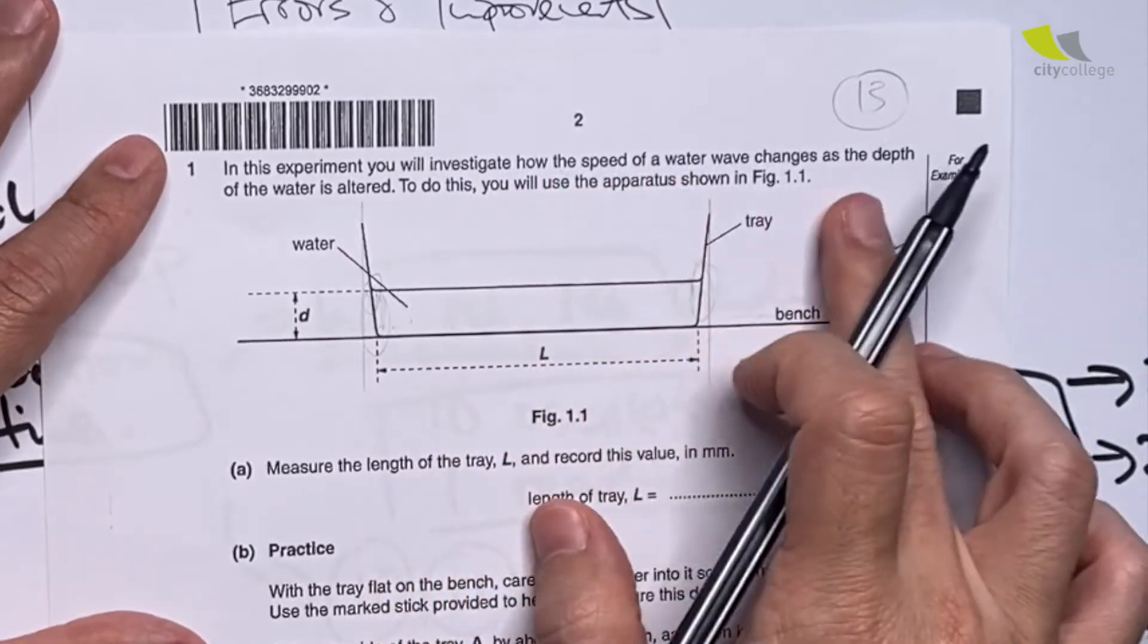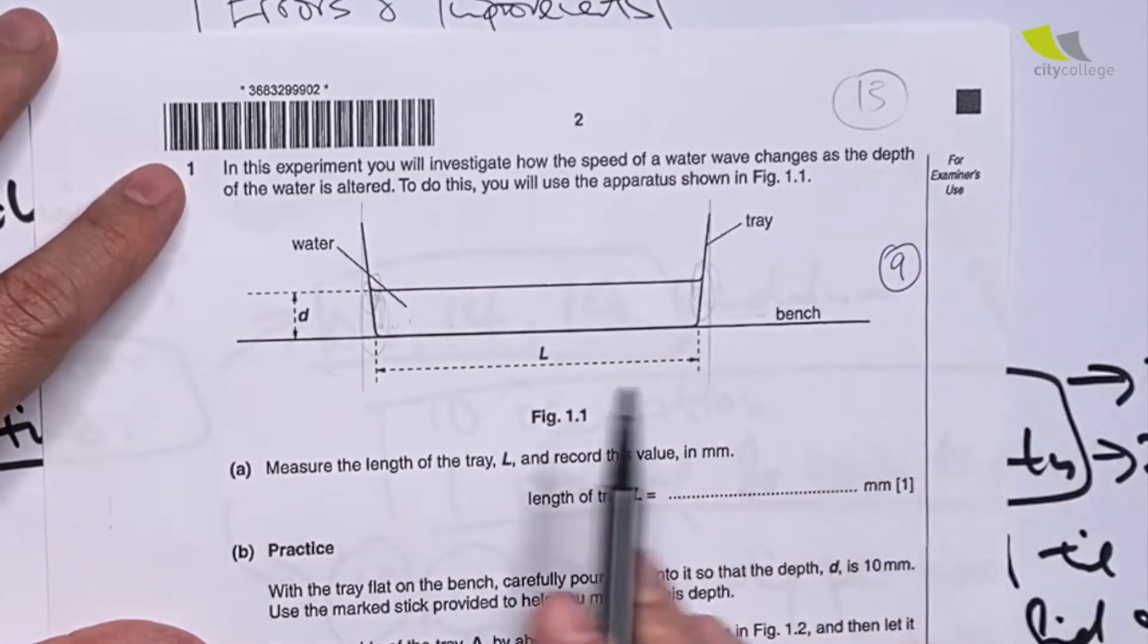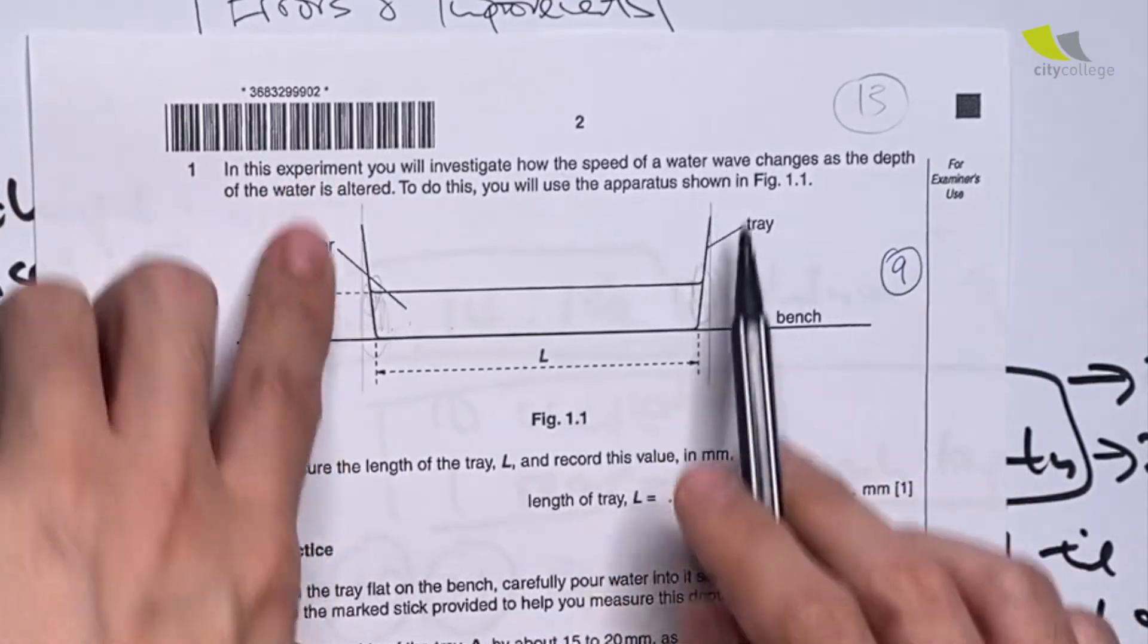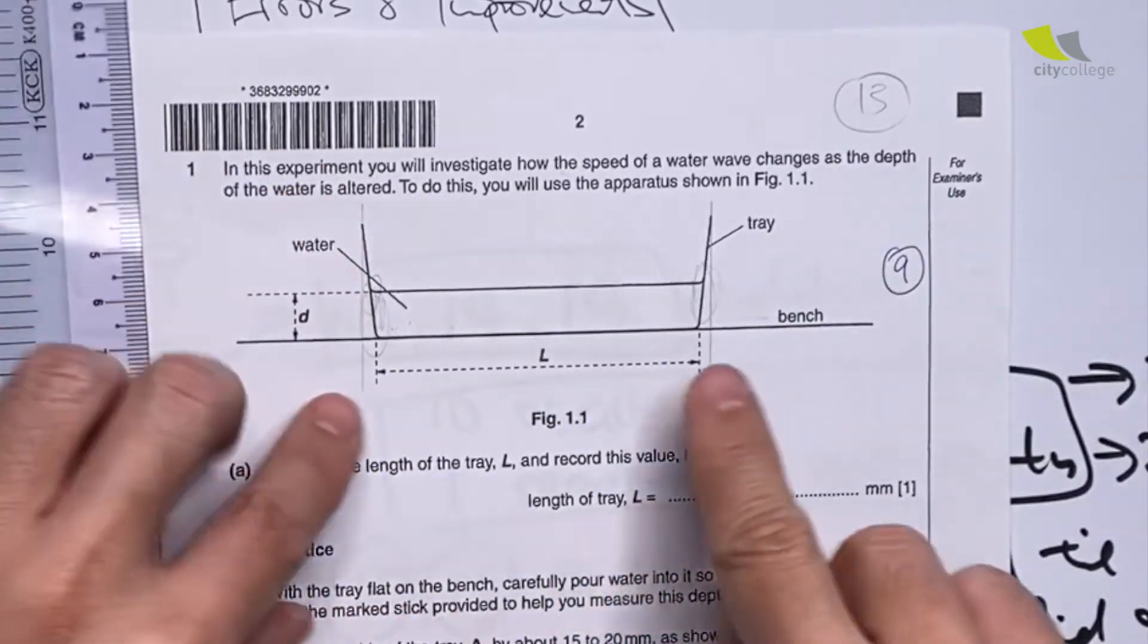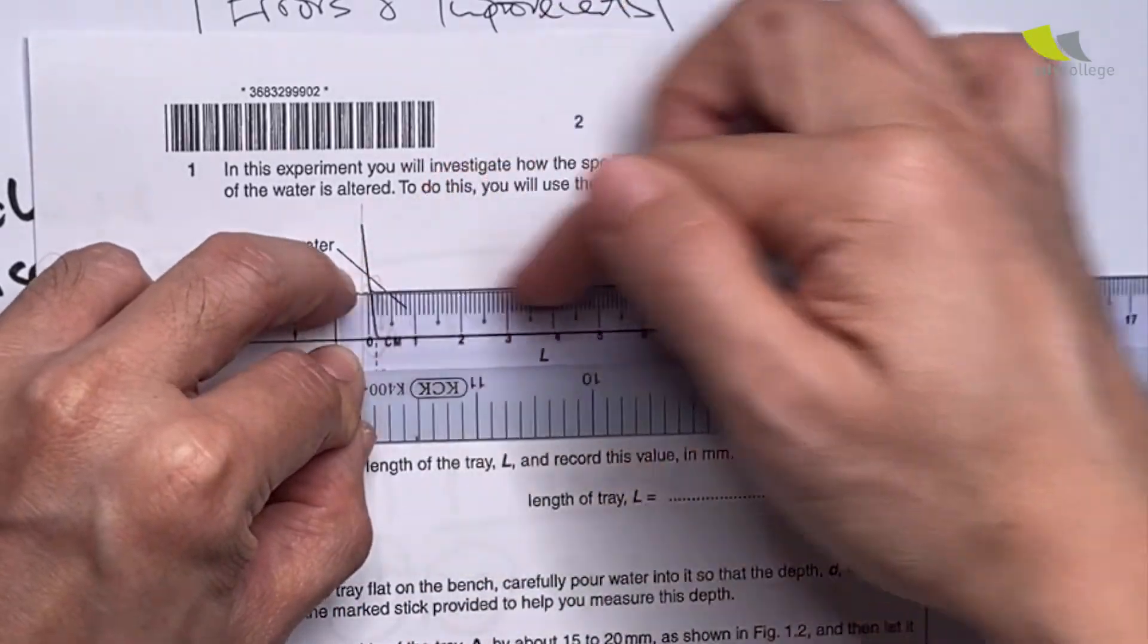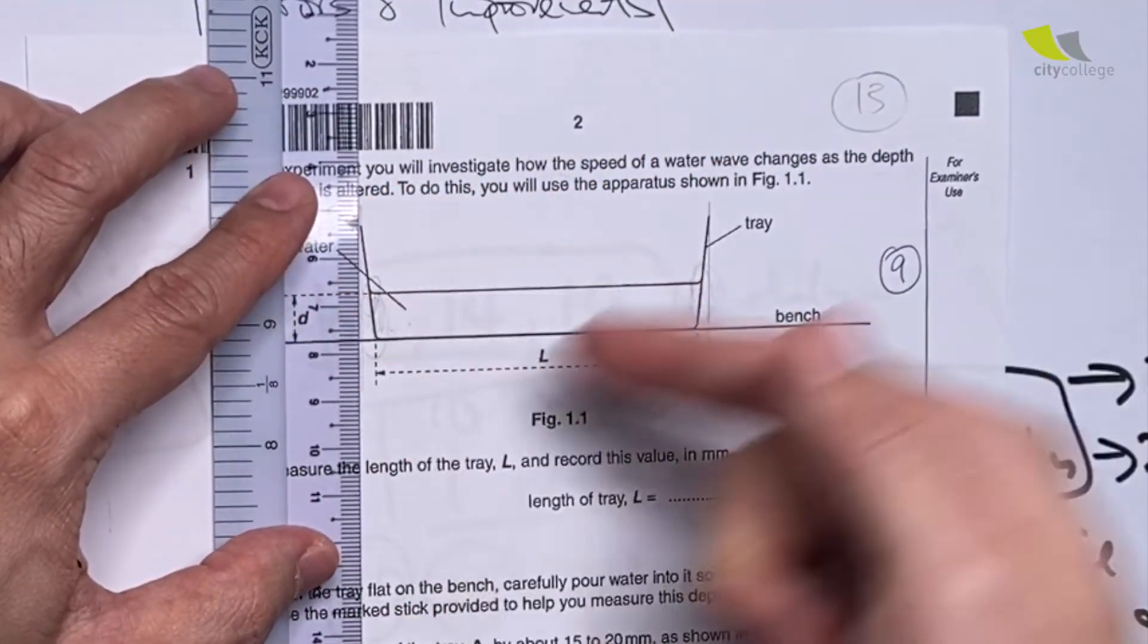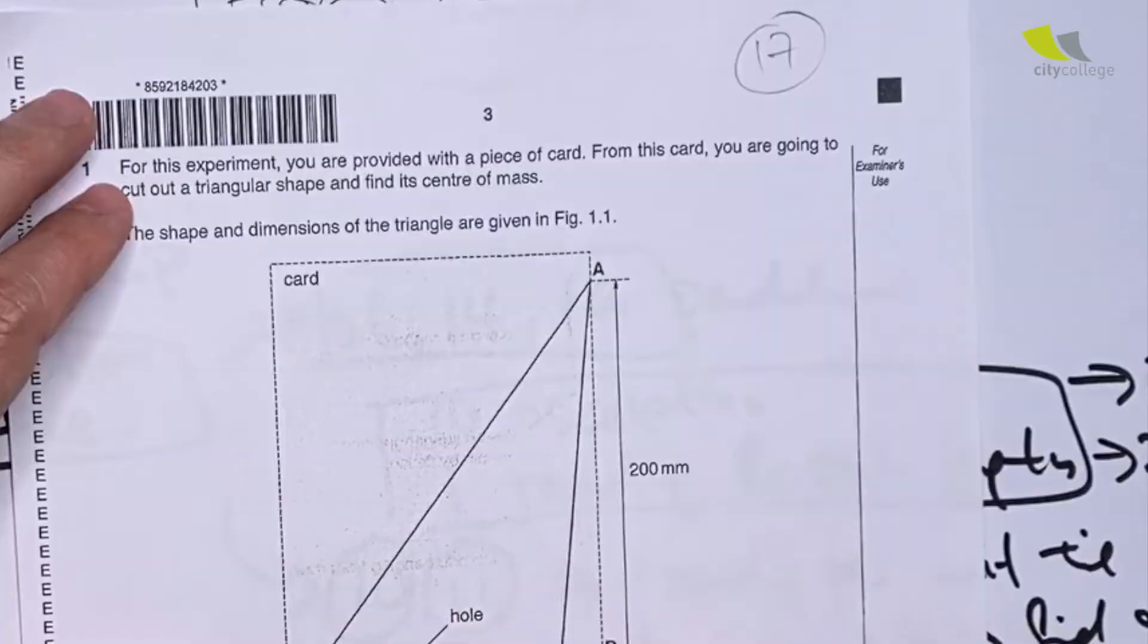Next, in 2013, you investigate the speed of the water waves as the depth of the water is changed. The tray is not consistent. This L over here is the bottom of the water, but you see the top of the water over here is longer than L because it's not a regular rectangle shape. This will affect your results because it's a non-regular shape.